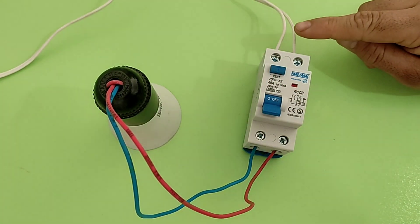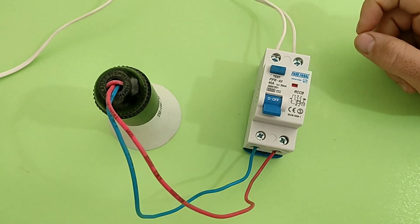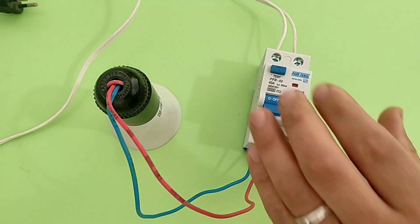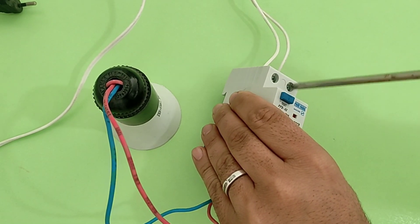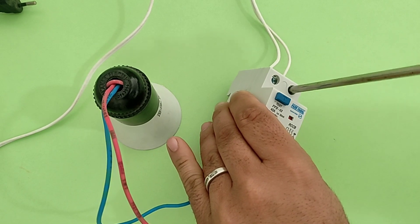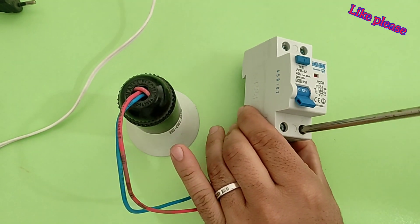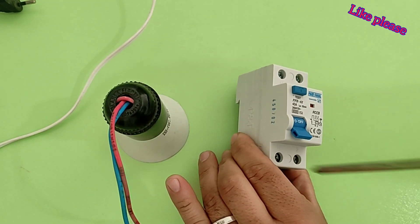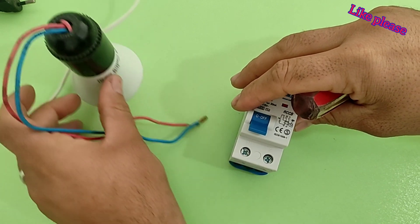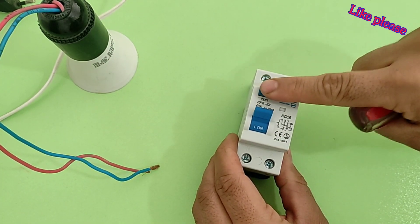But this is in the case that the switch is connected to the electricity. But while the switch is not connected to the electricity, this test key does not work. In this case, by pressing the test key, the switch is not disconnected.